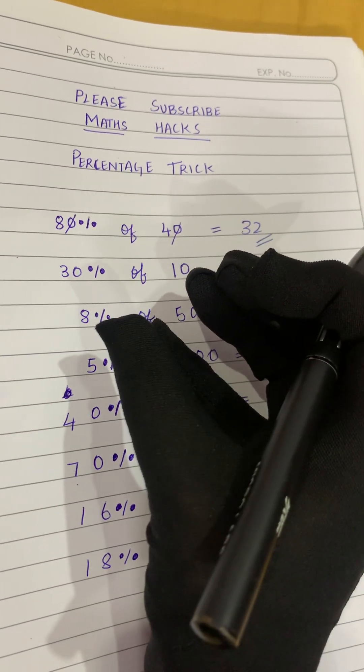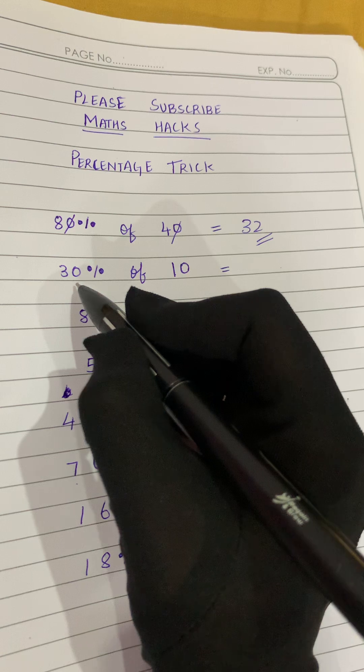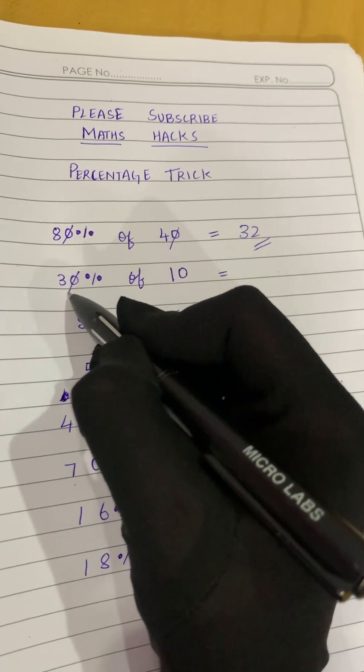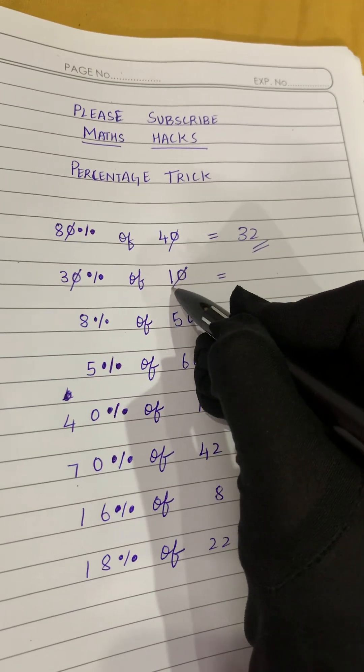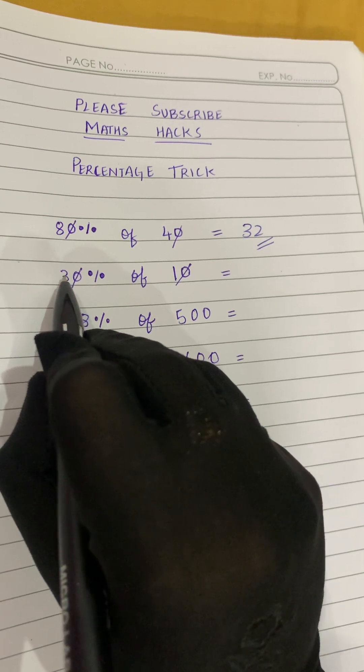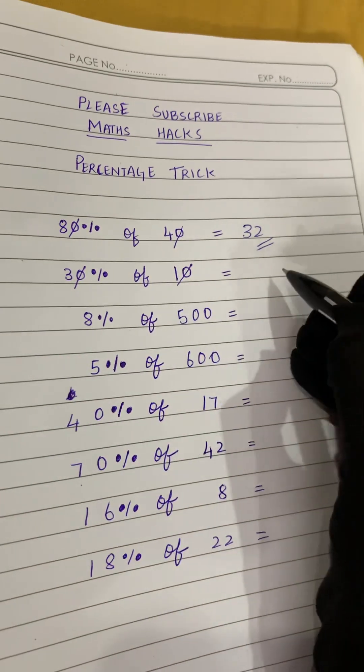Now the next sum is also the same as the previous one. We will cancel the zeros. The first step is we will cancel the zeros. Now what is left? 3 and 1. So 3 ones are 3, so 3 is our answer. So 30% of 10 is 3.